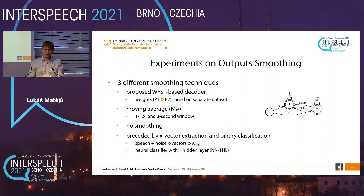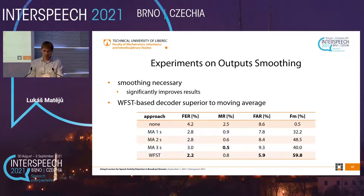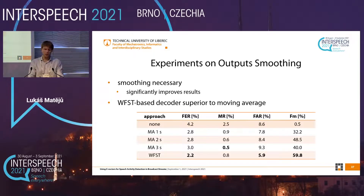For smoothing we tried three different techniques: the proposed decoder with penalties tuned on different datasets, moving average with different window sizes, and no smoothing at all. Results were much worse when we did not use any smoothing — especially the F-measure was very bad. The decoder based on weighted finite state transducers was the best, because the moving average is basically just one of the hypotheses of the decoder, so this was to be expected, but it was nice to see it confirmed.